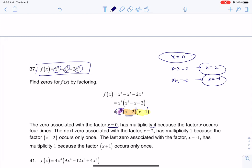The next 0 came at 2, so that one had a multiplicity of 1 because that was its exponent. The next 0 was negative 1, and that had a multiplicity of 1 as well because that was its exponent, so that's how I figured those out.